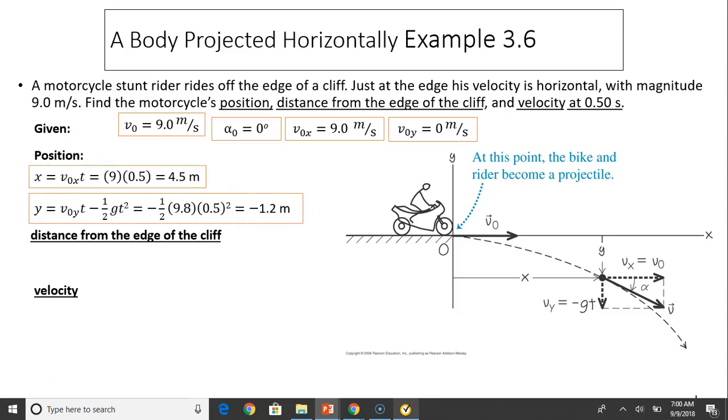For position: x equals V0x times t. Since ax equals 0, the position at 0.5 seconds is 4.5 meters. The position in the y at 0.5 seconds is negative 1.2 meters. As you can see from the diagram, it's negative because it's below the horizontal line, below zero.